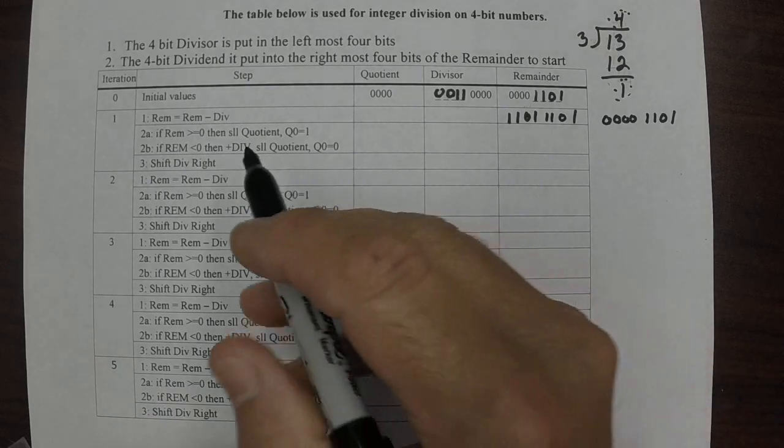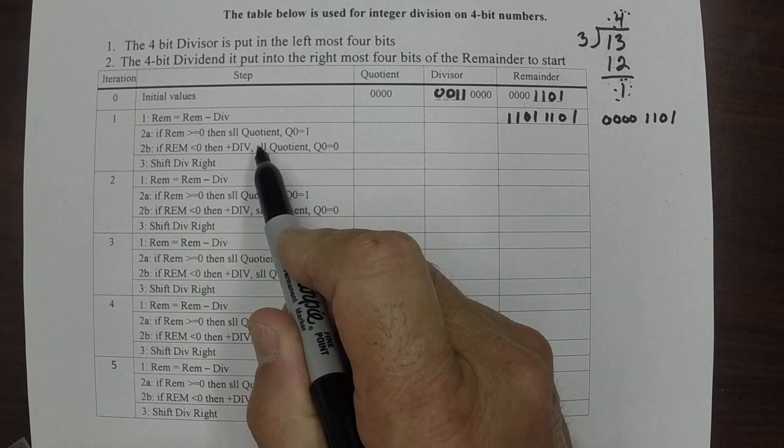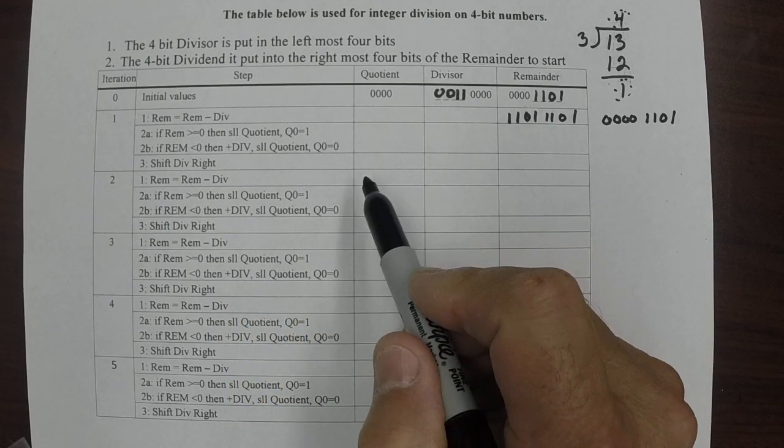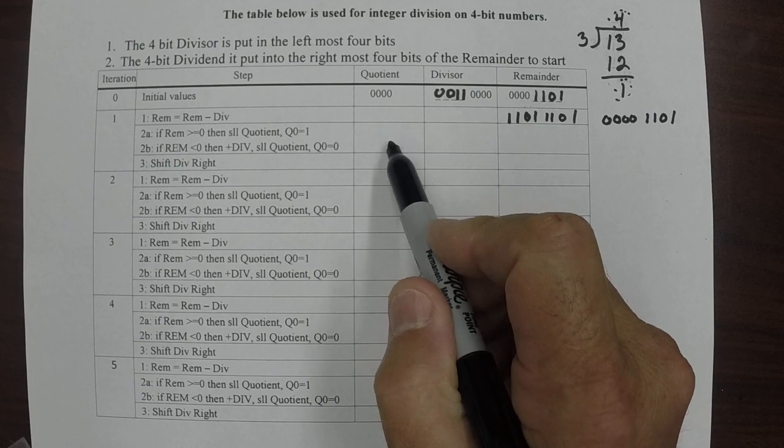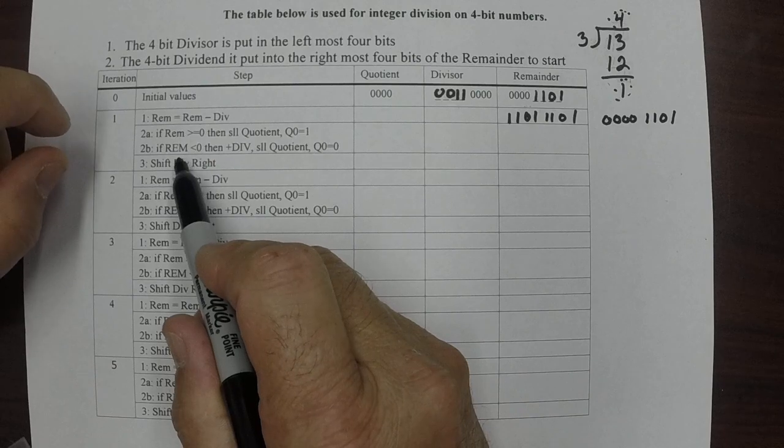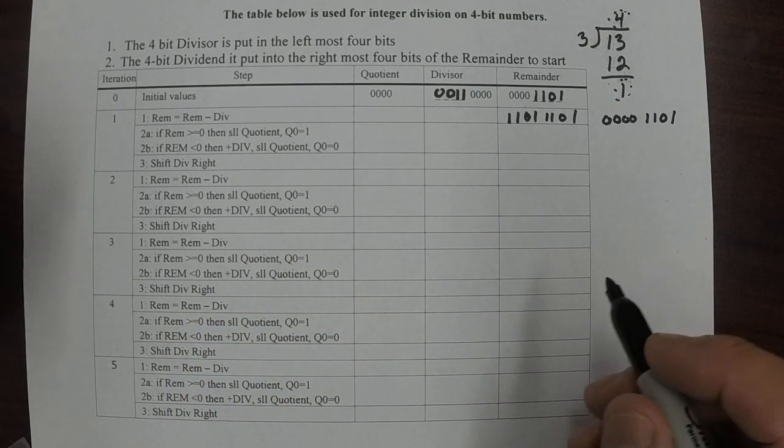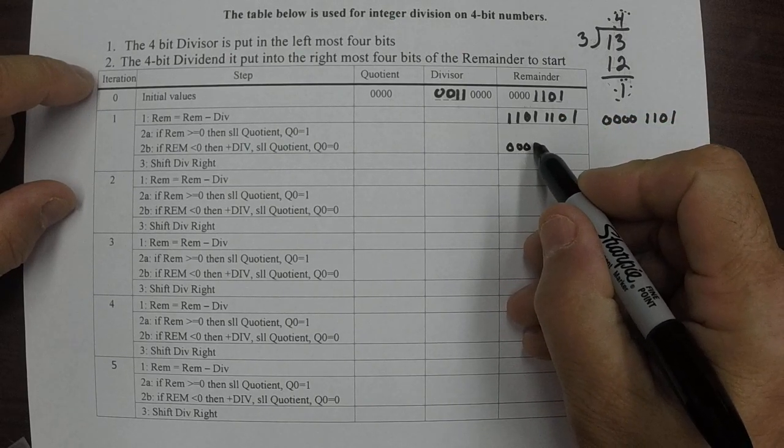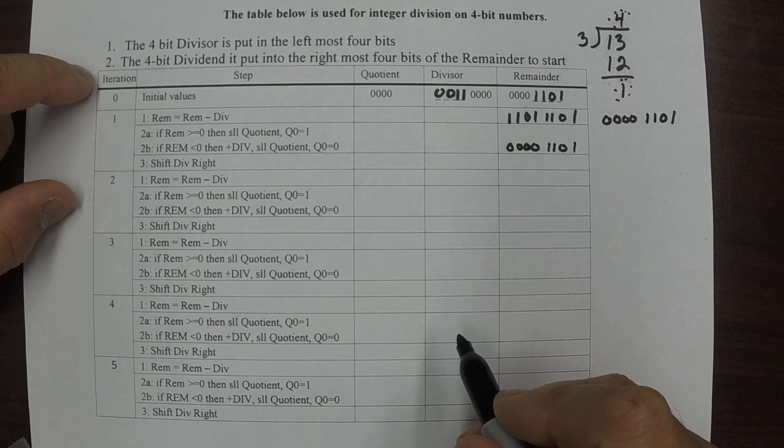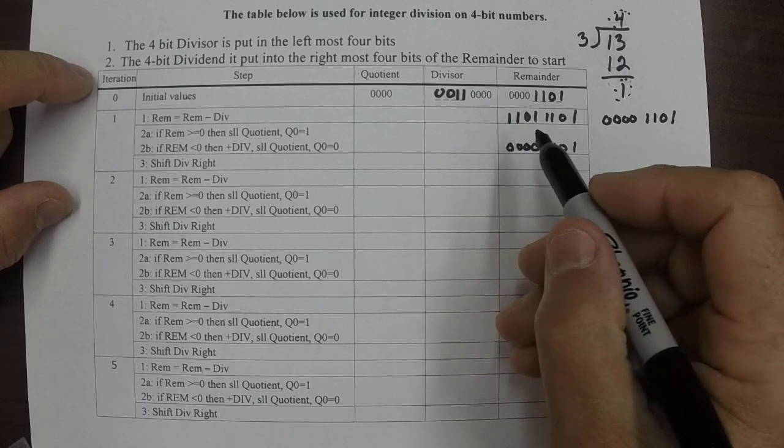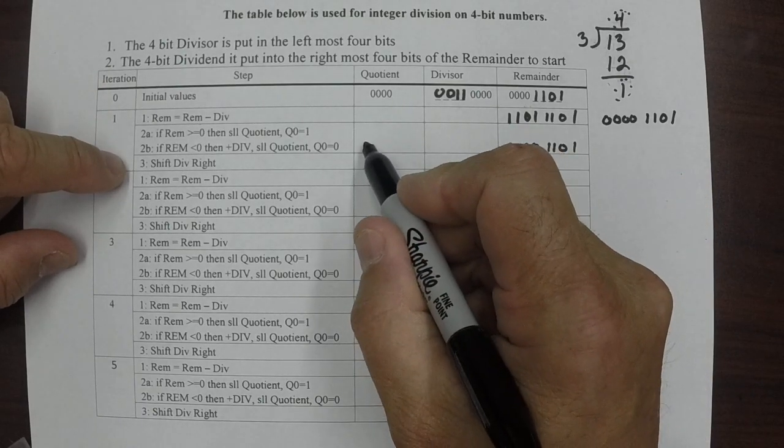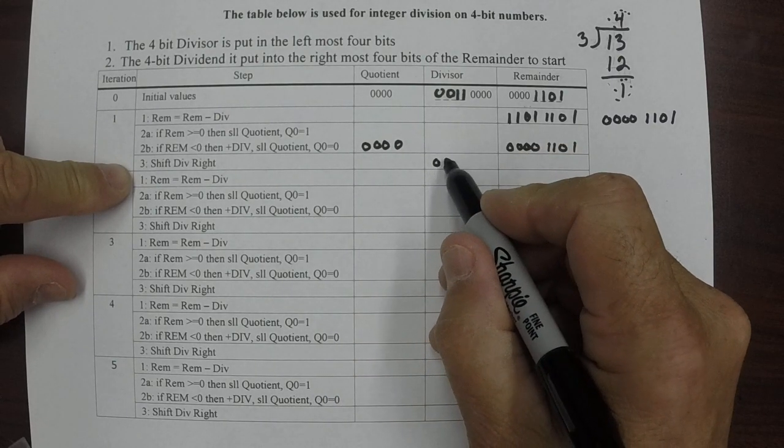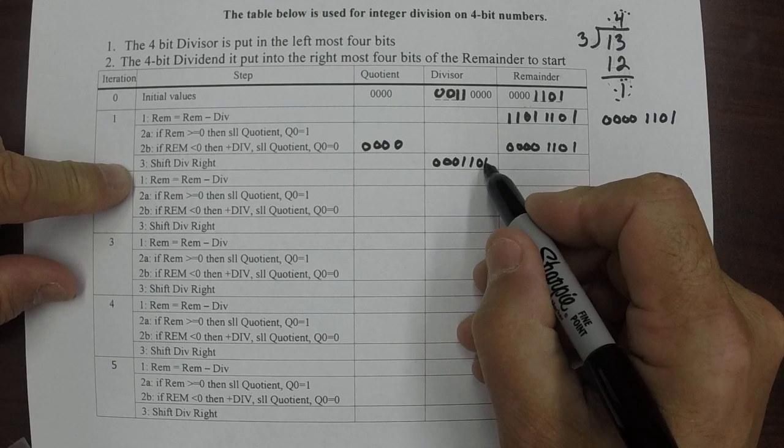Now the question is, if the remainder is greater than zero, then shift logical left the quotient and add one to the rightmost bit. If the remainder is less than zero, we just ignore everything and do the shift. So we restore the remainder to what it was in the previous step, which is one, one, zero, one. We shift the quotient left and put a zero right there. Then we shift the divisor right: zero, zero, zero, one, one, zero, zero.